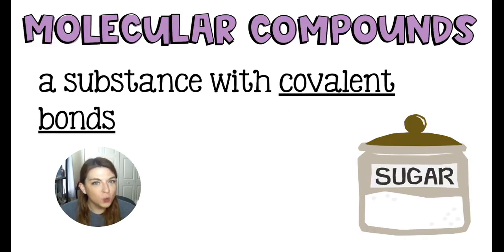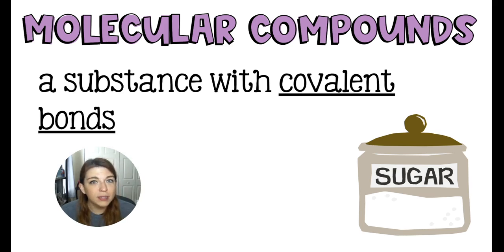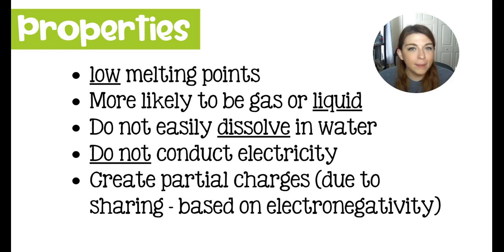Any compound that forms covalent bonds is called a molecular compound. Remember, if we have a compound with ionic bonds we call it a salt; any compound with covalent bonds we call a molecular compound. Molecular compounds have properties very different from ionic compounds — they are going to have very low melting points. Think of sugar: if you've ever made jam or caramel, sugar melts, and you can even burn sugar.